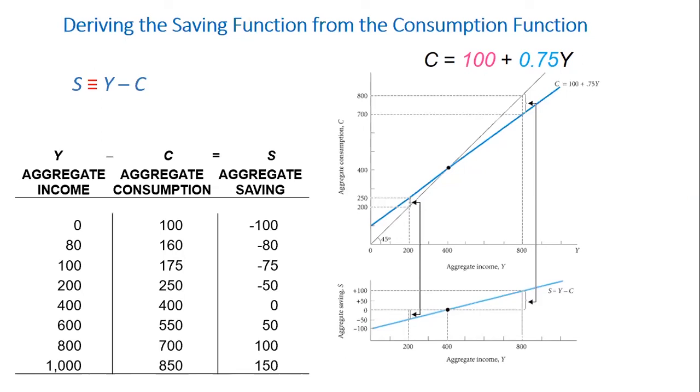Now, the intersection between the blue line and the 45 degrees line is where we have equality and where we have Y equals C, and here at a point of 400. Now, if you want, you can try to figure out how we can derive the saving function from the consumption function. Also, you can pause the video and try it by yourself.